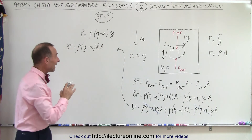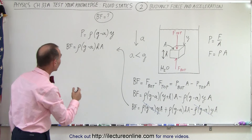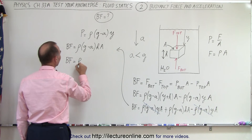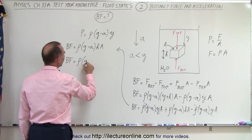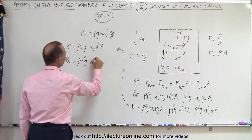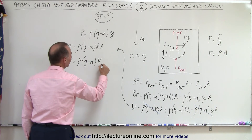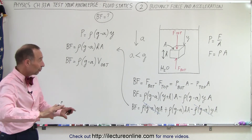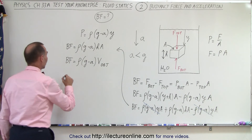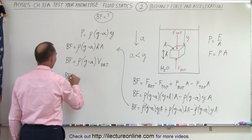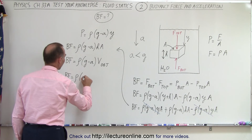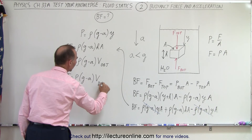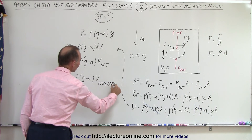We recognize that h times A is simply the volume of the object — which is also the volume of the displaced liquid. So the buoyancy force is: BF = ρ(g − a) × V, where V is the volume of the displaced liquid.